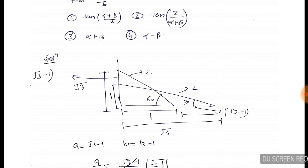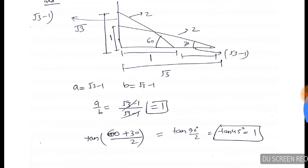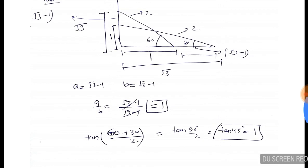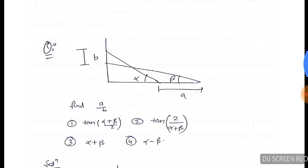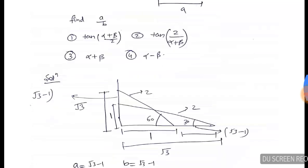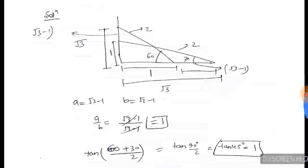So the horizontal distance is root 3 minus 1, and the vertical distance is also root 3 minus 1. So A and B are both equal and both come out to 1. Therefore the A by B value is 1.